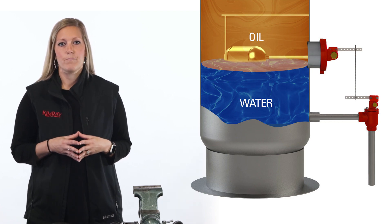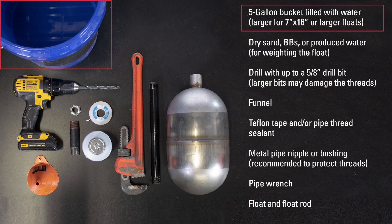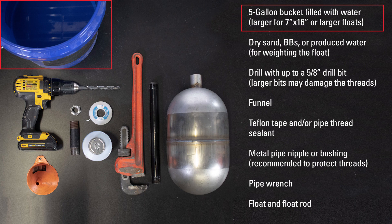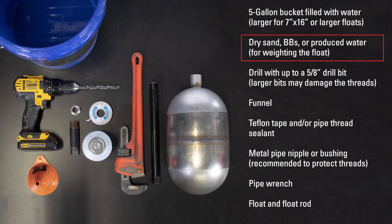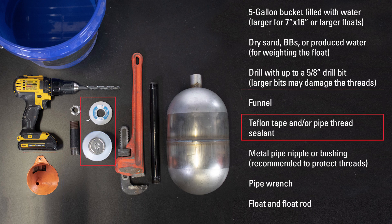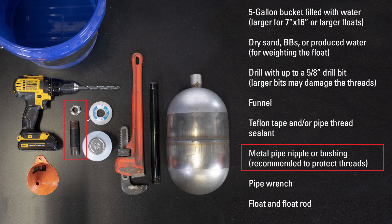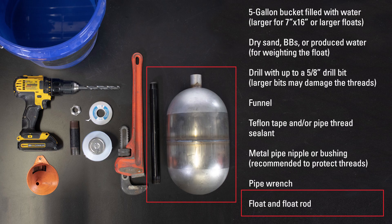Here is what you'll need to do this. A 5-gallon bucket or larger if you're weighing a 7x16 or larger float. Dry sand, BBs, or produced water. A drill with up to a 5/8 inch drill bit. A funnel, Teflon tape and/or pipe thread sealant. A metal pipe nipple or bushing, which is recommended to protect the threads. A pipe wrench and, of course, the float and float rod.